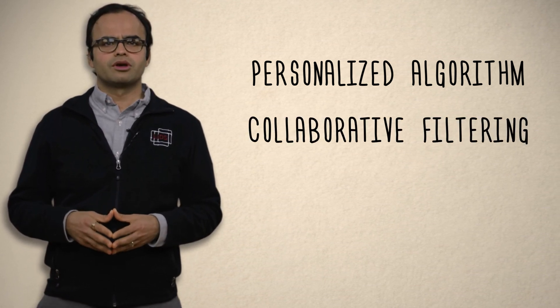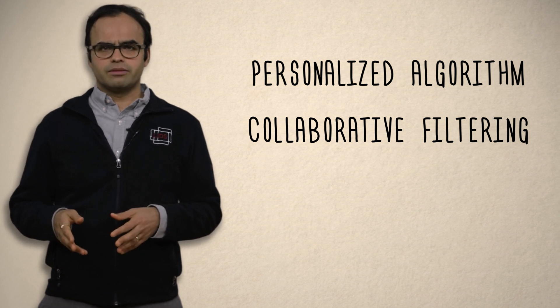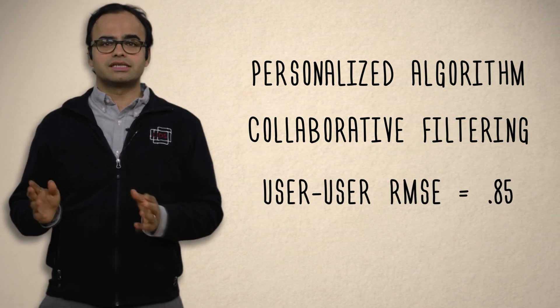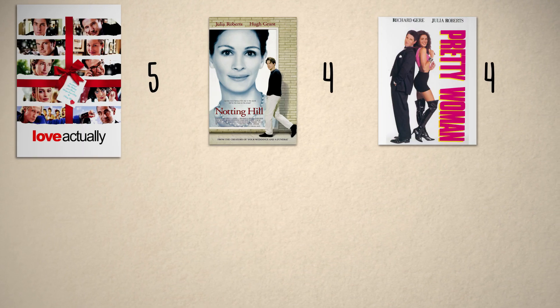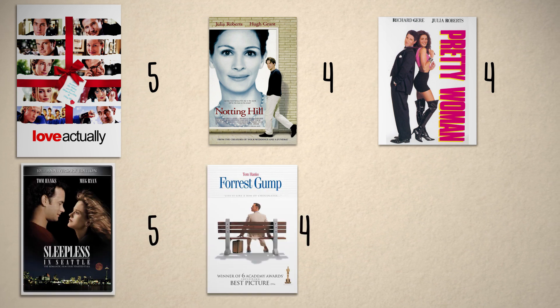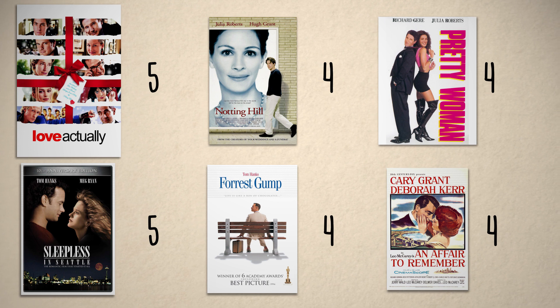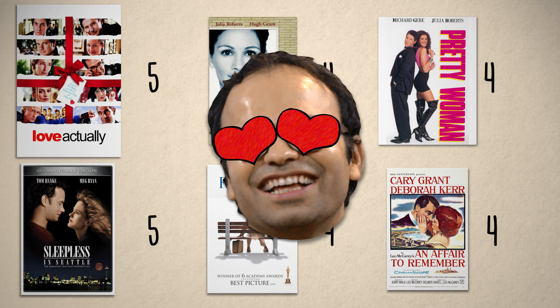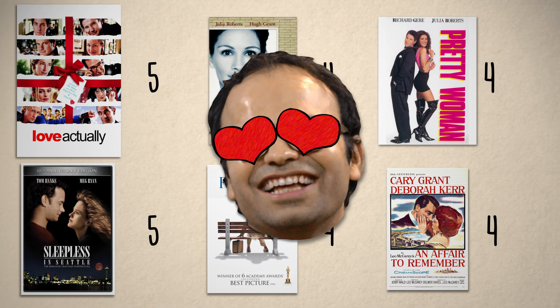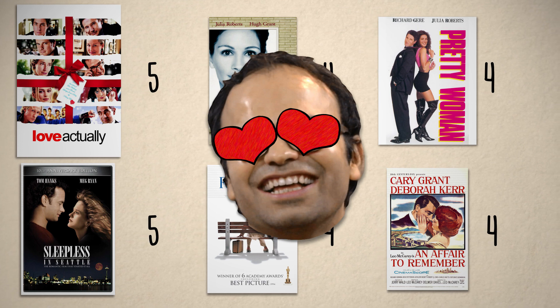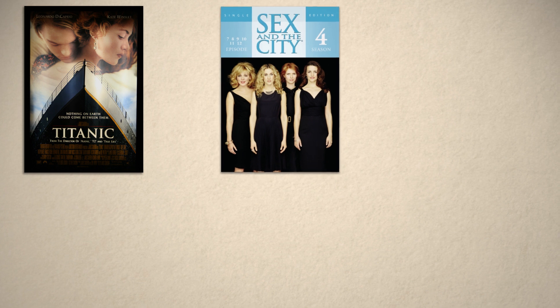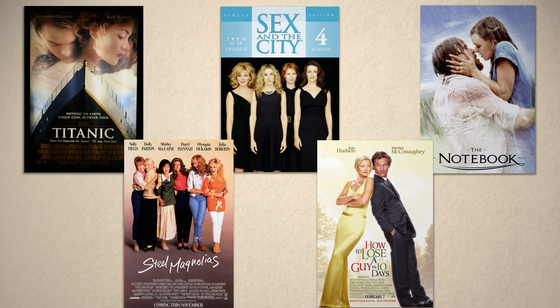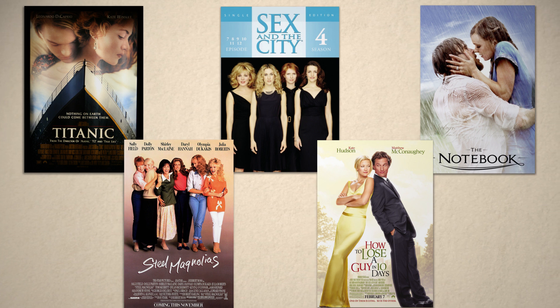We shall first look at collaborative filtering algorithms. Using the user-user collaborative filtering algorithm, we find that the RMSE is 0.85 — down from 0.983 of the population averages, a major improvement due to personalization. For example, suppose I have rated Love Actually 5, Notting Hill 4, Pretty Woman 4, Sleepless in Seattle 5, Forrest Gump 4, and An Affair to Remember 4. Clearly, I really like romantic movies. The collaborative filtering algorithm produces personalized recommendations including Titanic, Sex and the City Season 4, The Notebook, How to Lose a Guy in 10 Days, and Steel Magnolias — clearly a good fit for the profile of a romantic movie fan.